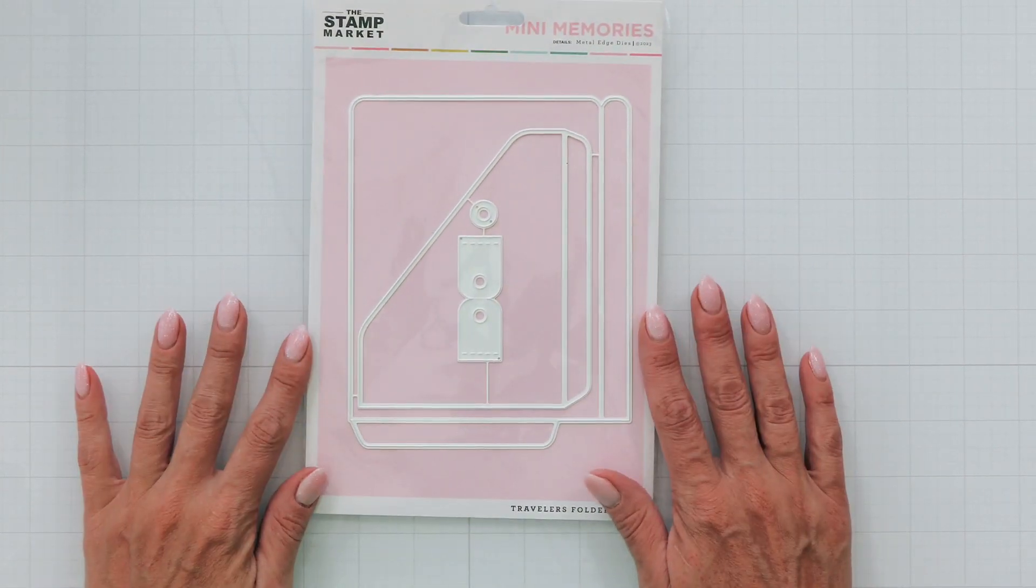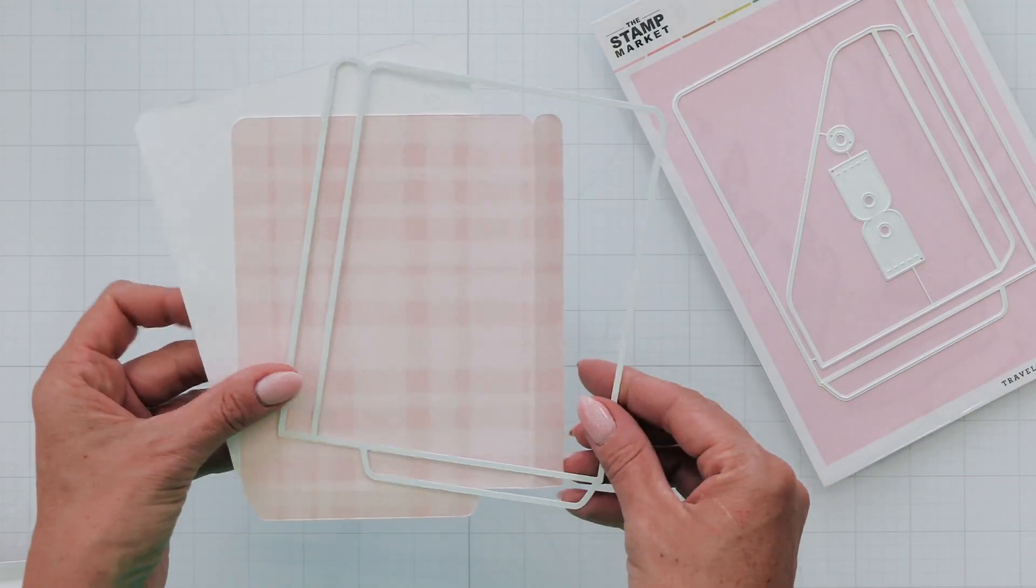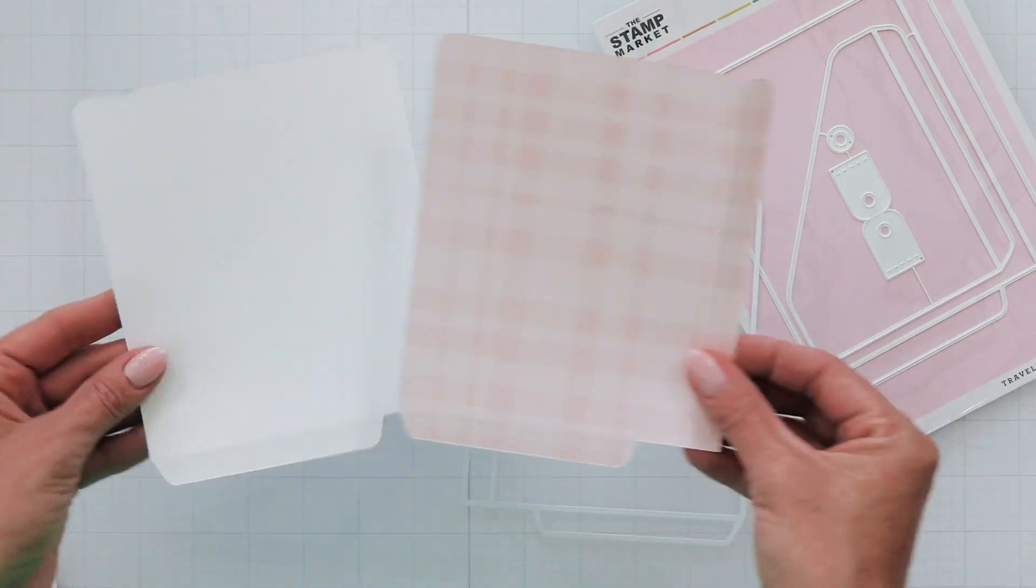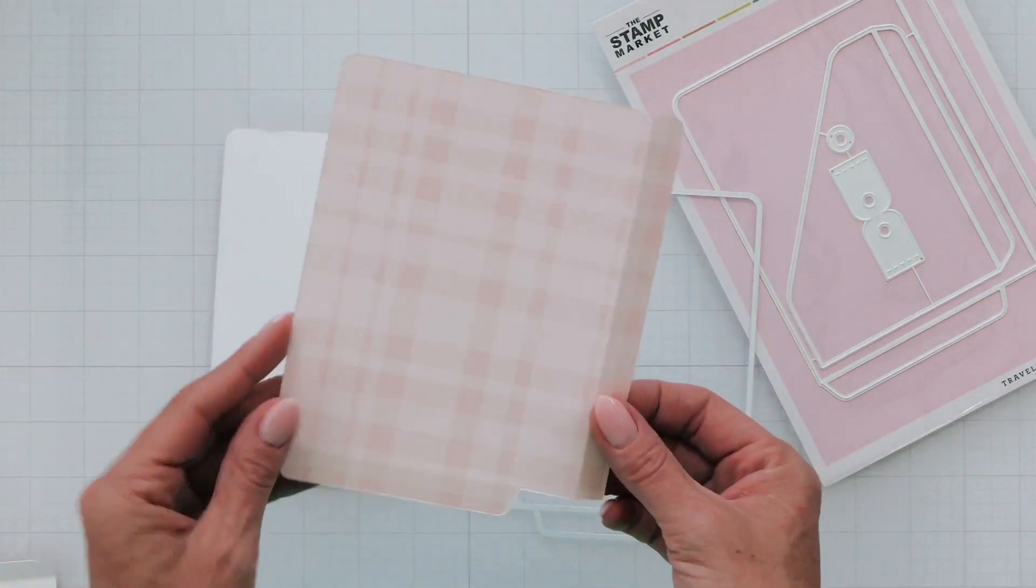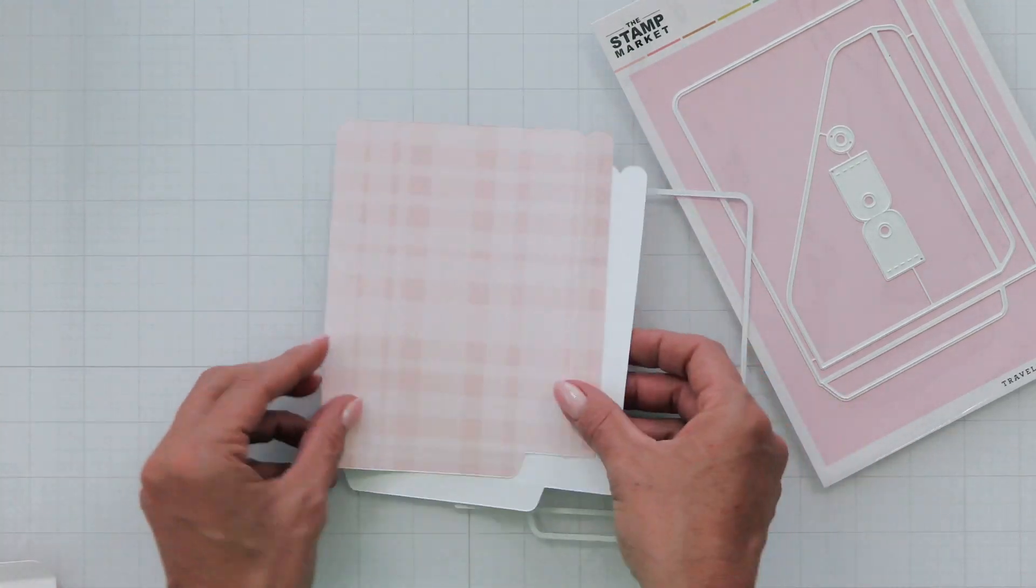I'll be showing you how to put this together using our new Cozy Days pattern papers. You'll cut one with the pattern facing up and cut one with the pattern facing down. If you're using regular cardstock this won't matter.